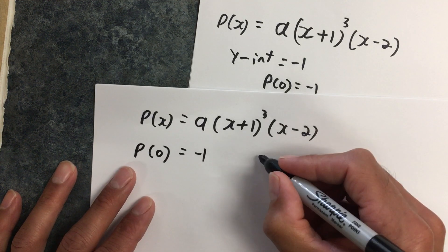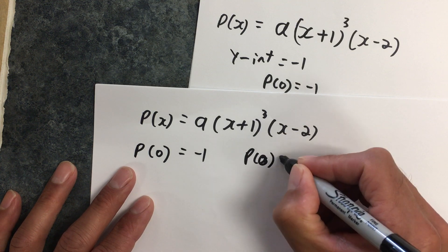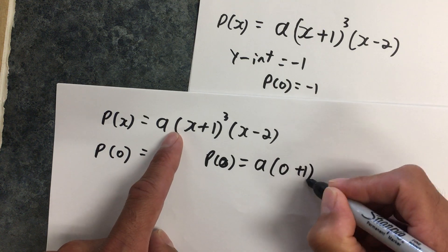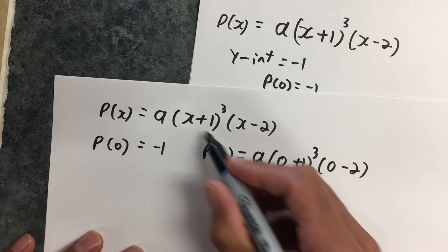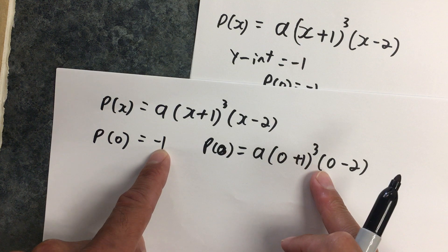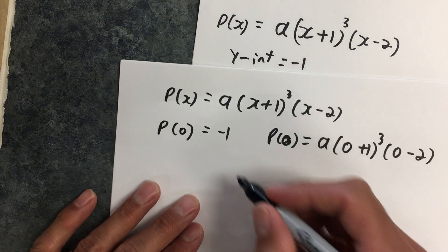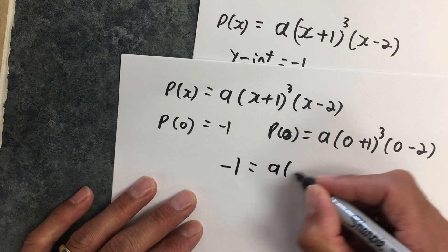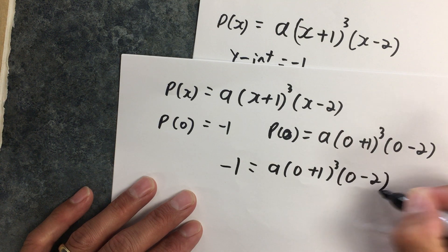However, also, if x is 0, my polynomial is a times (0 + 1)³ times (0 - 2). See, I've just put 0 into here. So these are both expressions of the value of my polynomial when x is 0, so I make them equal to each other. That means that -1 is equal to a times (0 + 1)³ times (0 - 2).